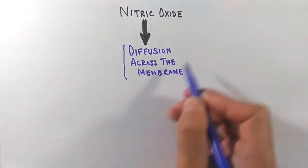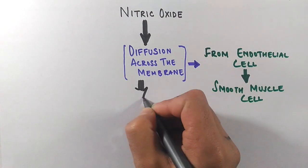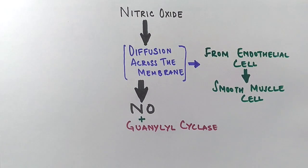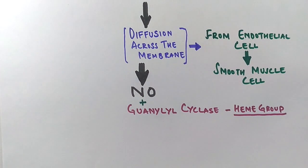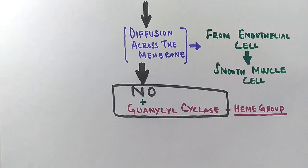The nitric oxide produced by endothelial cells gets diffused across the membrane from endothelial cell towards the smooth muscle cell. Here in the smooth muscle cell, this nitric oxide combines with guanylyl cyclase - it actually combines with the heme group of guanylyl cyclase and activates the enzyme.